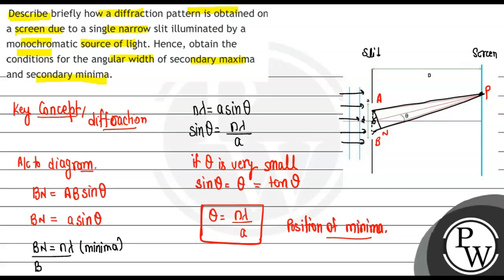For maxima, the condition is that BN should be (2n+1)/2 times lambda. So for maxima position, BN is (2n+1) lambda divided by 2, which equals a sin theta. So sin theta equals (2n+1) lambda upon 2a.